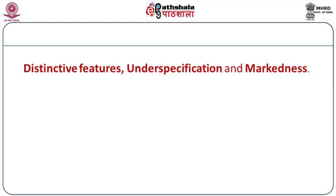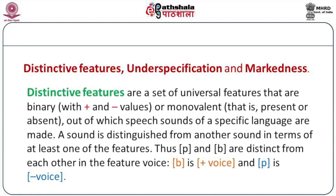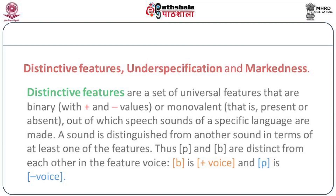Distinctive features are a set of universal features that are binary — that is, with plus and minus values — or monovalent, that is either present or absent — out of which speech sounds of a specific language are made. A sound is distinguished from another sound in terms of at least one feature. Thus, /b/ and /p/ are distinct from each other in the feature voice: /b/ is plus voice and /p/ is minus voice.